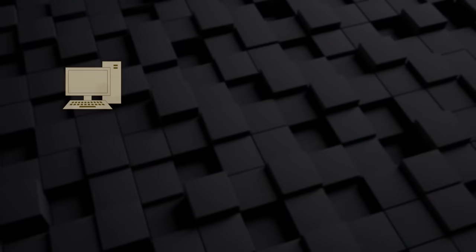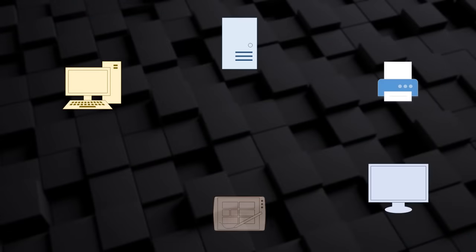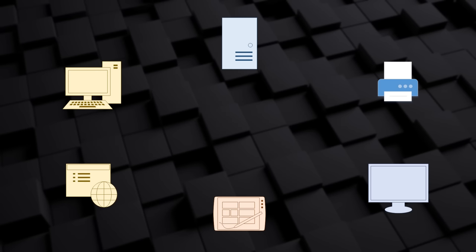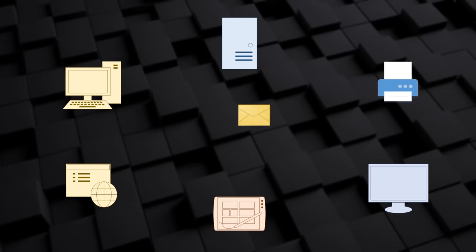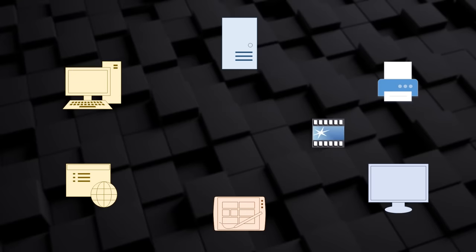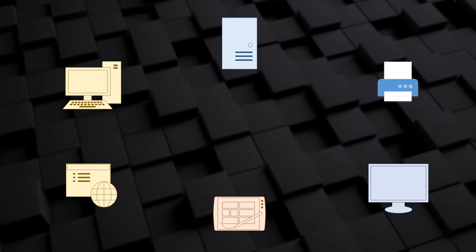At work or home, you have a bunch of devices — computers, printers, TVs, and so on. You connect these by means of a network. When the devices are connected, they're able to share data. This could be sending a print job to a printer, sending an email, or streaming video. This can also be used for sharing an internet connection.